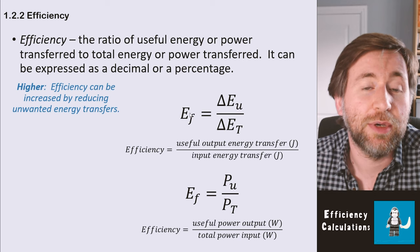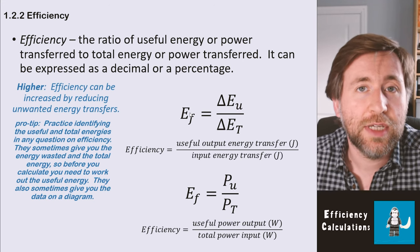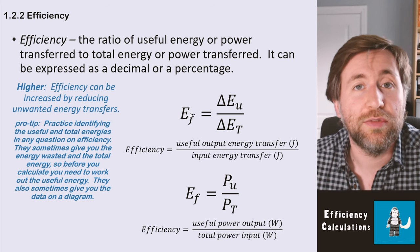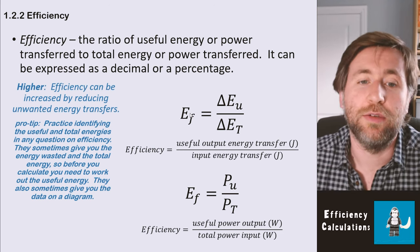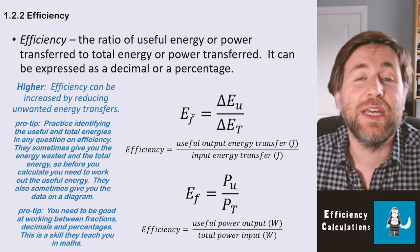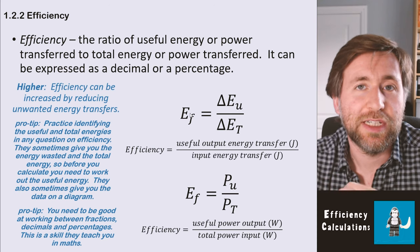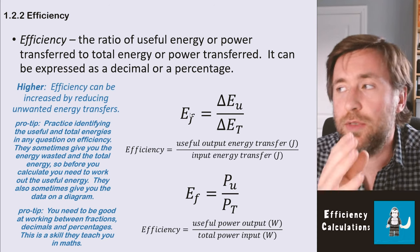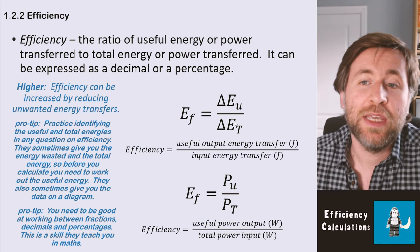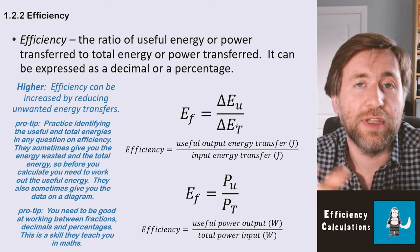We can increase efficiencies by reducing unwanted energy transfers — for example, lubricating something to stop it heating up as much. My pro tip: practice identifying the useful and total energies in any given situation. Sometimes they give you wasted energies and not the useful, so you must calculate the useful first. Values may be given on diagrams rather than in the question text. You need to be good at working with fractions, decimals, and percentages — they're all equivalent. Type a fraction into a calculator to get a decimal, then multiply by 100 for a percentage.